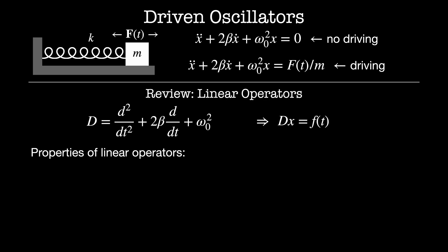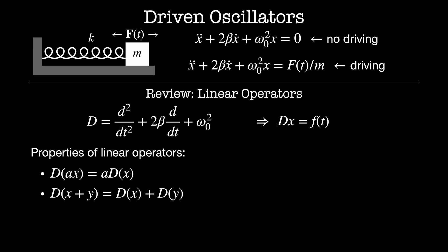Linear operators have some really nice properties and they're going to show up all over the place in so many different physics problems, both in this class and in other classes. The first property is D acting on a scalar a times x equals a times D acting on x. The next is D acting on two functions x plus y equals D acting on x plus D acting on y. These two properties together define an operator as being linear.